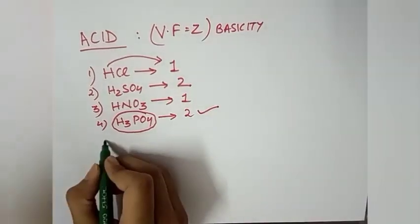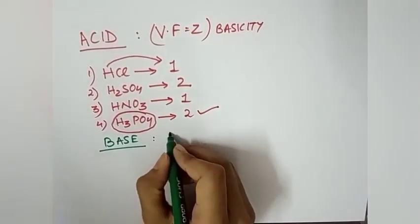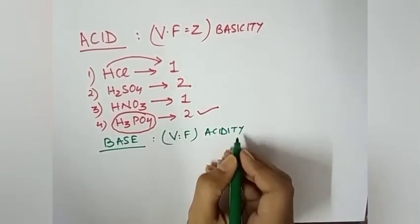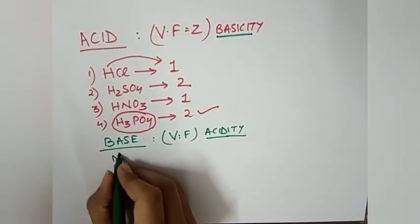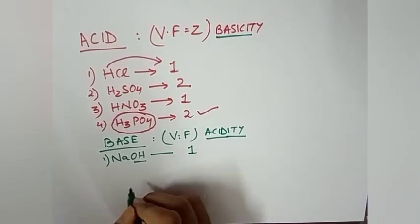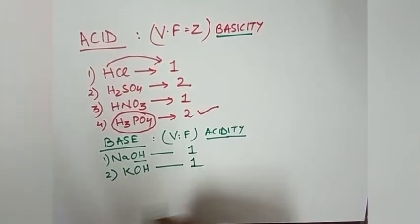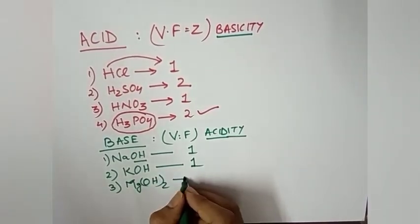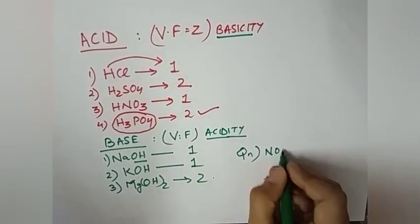Now we will see for base. For base the valence factor is called acidity. For NaOH the valence factor will be one as it can give one OH- ion. For KOH the valence factor will be also one.